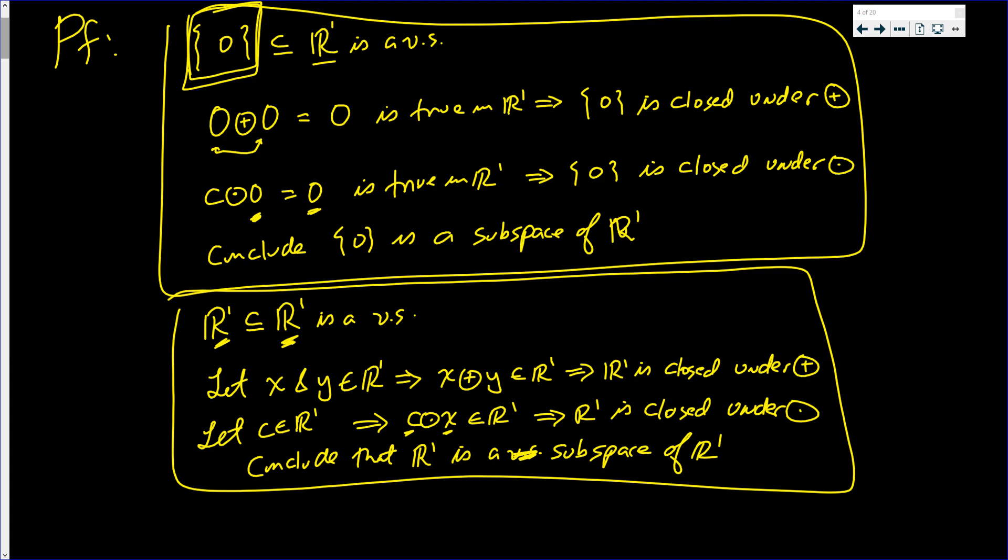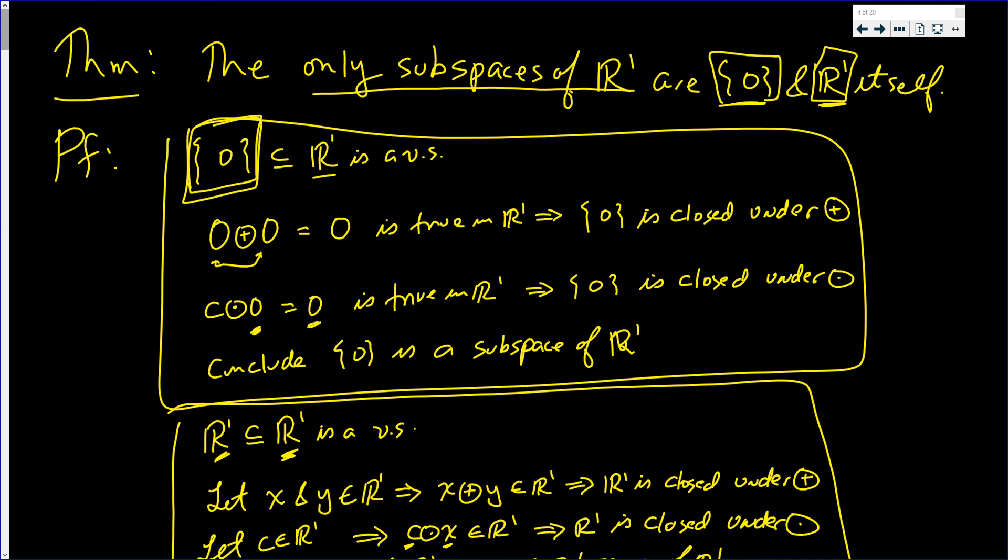Now, let's see. We showed that that's a vector space. We showed R1 is a vector space. Well, let me take that back. We showed that the set that just contains zero is a subspace of R1. And we showed that this set R1 is a subspace of R1. But those are supposed to be the only two.